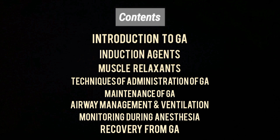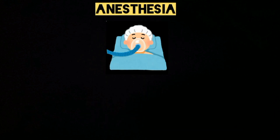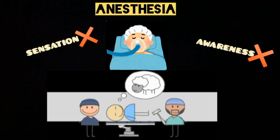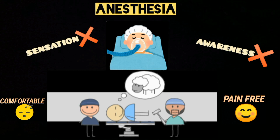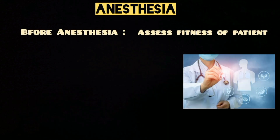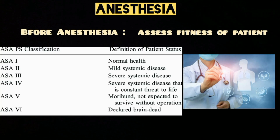First, let's understand what anesthesia means. It's a state of controlled, temporary loss of sensation and awareness that keeps the patient comfortable and pain-free during a medical procedure. Before administering anesthesia, it is important to assess the fitness of the patient to estimate the risk. For this, the American Society of Anesthesiologists adopted a six-category physical status system. You can pause the video to read the description of each class.